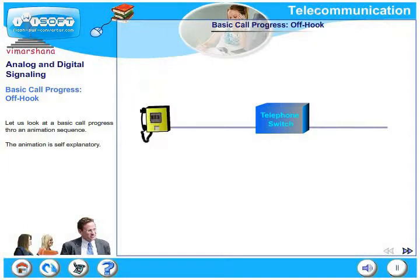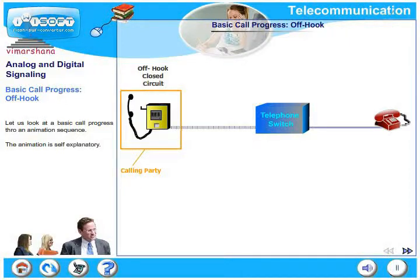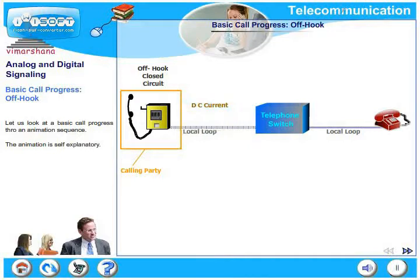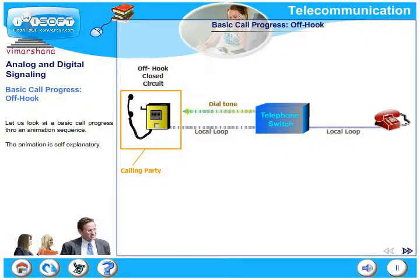Let us look at the call flow sequence. The calling party goes off hook — the hook switch on the telephone shorts both wires and creates a DC loop all the way up to the telephone exchange. The exchange senses the DC loop, and since DC current flows through the loop, the exchange acknowledges the calling party's request and extends a dial tone.